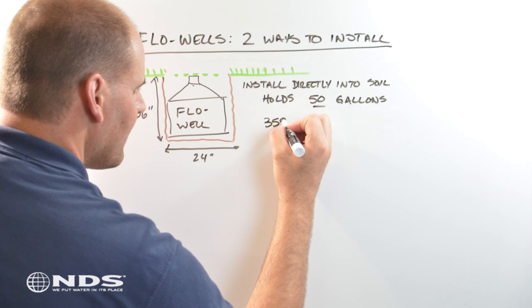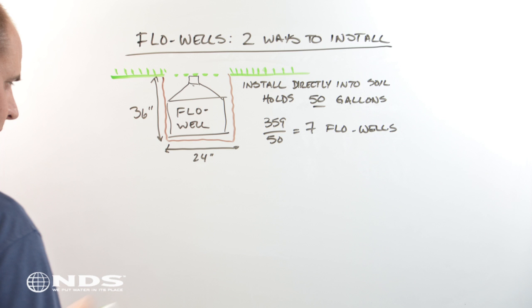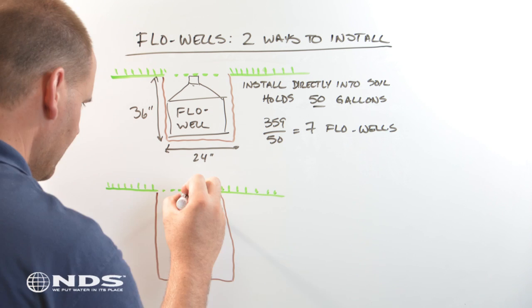There are two ways to install a flow well, either directly in the soil or with gravel backfill. A flow well installed without any backfill can hold 50 gallons of water. If you choose to install the flow well this way, you will need seven flow wells to store 359 gallons of water.